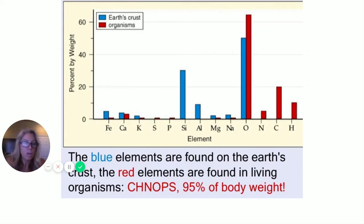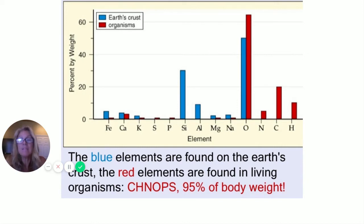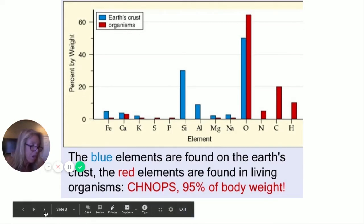CHNOPS is just a way to remember the elements found in the human body. Go to the introduction in your notes and add: basic to life and make up 95% of the body weight. Hopefully you know what each of those elements stands for — it's Carbon, Hydrogen, Nitrogen, Oxygen, Phosphorus, Sulfur.